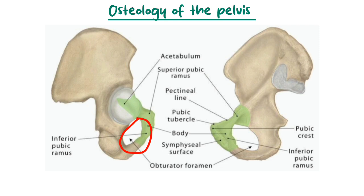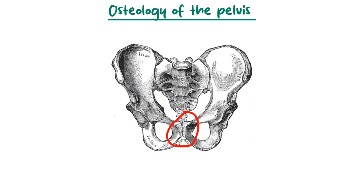The third landmark on the pubis is the pubic tubercle, a small bump on the superior pubic ramus that serves as an attachment site for the inguinal ligament, which extends to the ASIS. The fourth landmark is the pubic symphysis, an important landmark for radiography students as it helps locate the centering point when taking hip x-rays. It is a fibrocartilaginous joint connecting the two pubic bones, and it provides flexibility during childbirth.